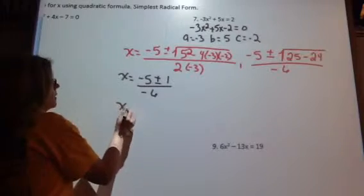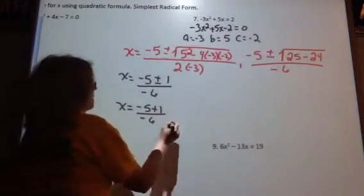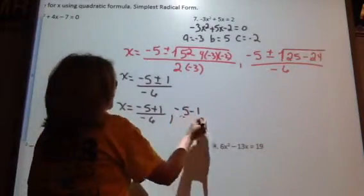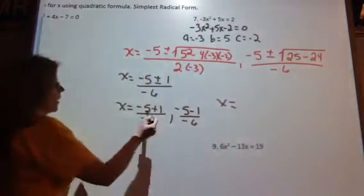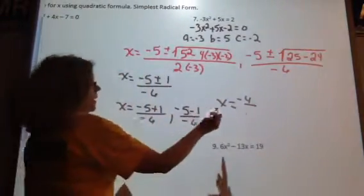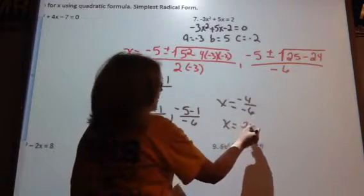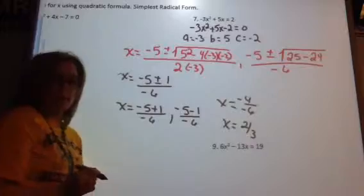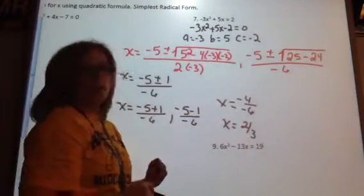Okay, so x equals negative 5 plus 1 over negative 6. Negative 5 minus 1 over negative 6. So what are we getting here? Negative 5 plus 1 is negative 4 over negative 6. That simplifies to positive 4 over 6, which simplifies to positive 2 thirds. They share a common factor of 2.